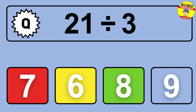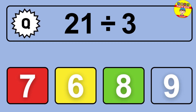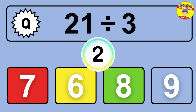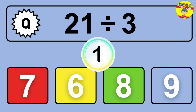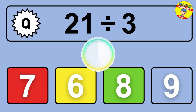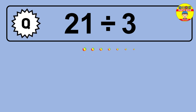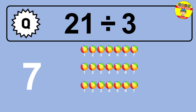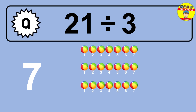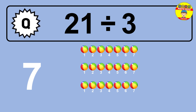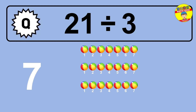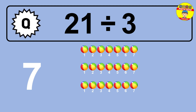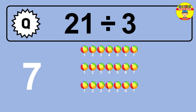What is 21 divided by 3? Picture this — you have 21 objects to divide into groups of 3. How many groups can you make? Let's think about it. Ready to find out? Let's break it down. Let's imagine you have 21 objects. Can you picture them lined up?